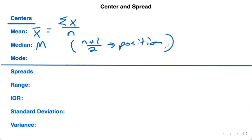If there's a middle number, that's the median. If there's two middle numbers, you take the average of them.